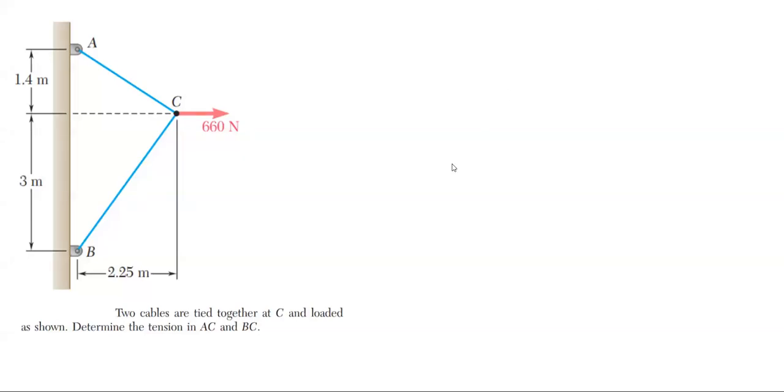Hello everyone, and welcome back. Before we begin, please make sure that you like and subscribe because it really does help out our channel. We'll be solving this problem shown on the screen here, and this is an equilibrium problem. We have these two cables A, C, and B, C that are tied together here at point C and loaded with the 660 newtons of force acting to the right.